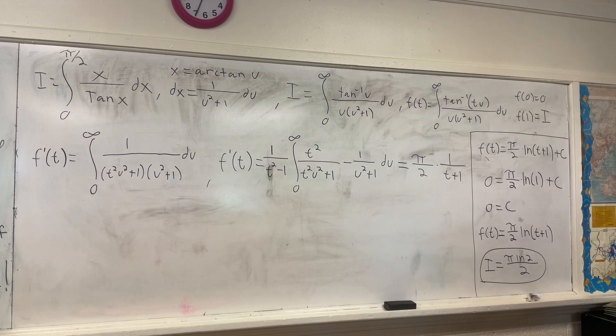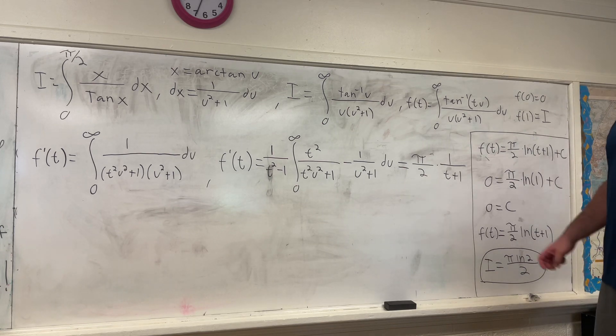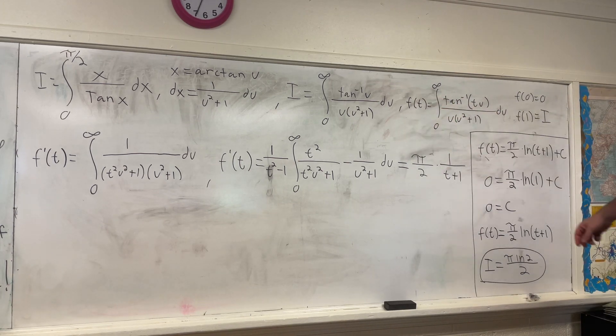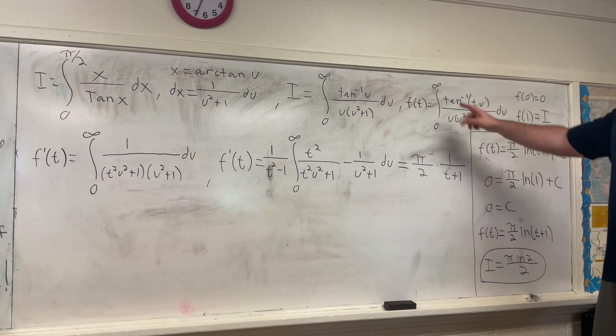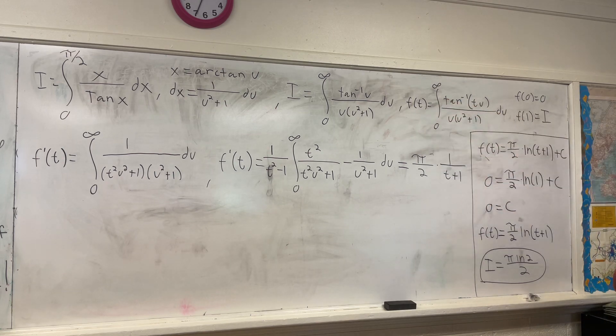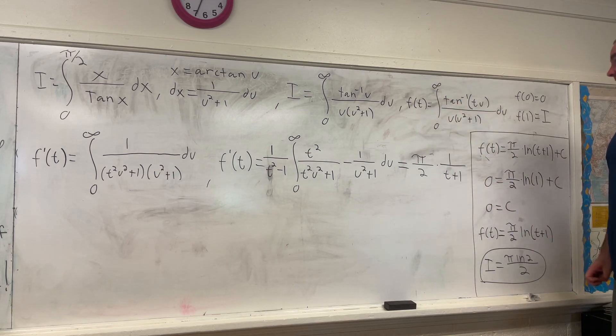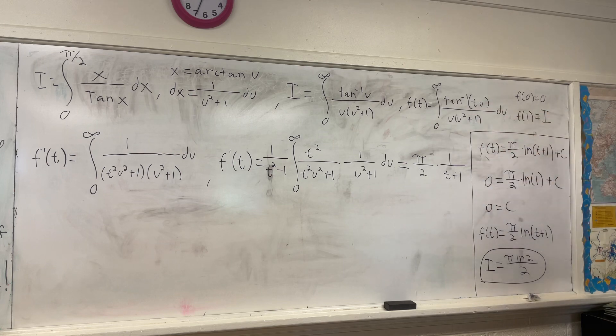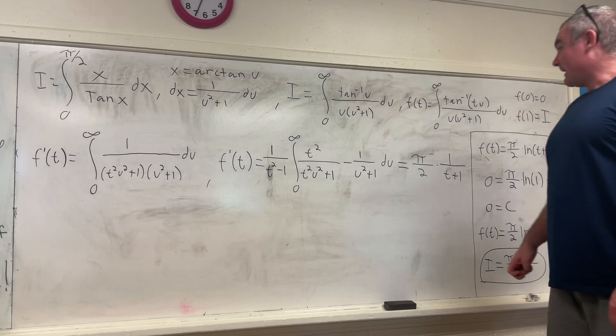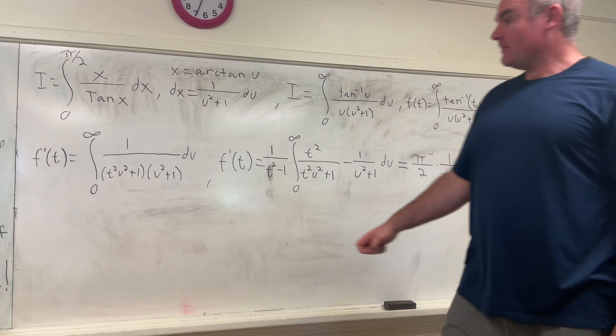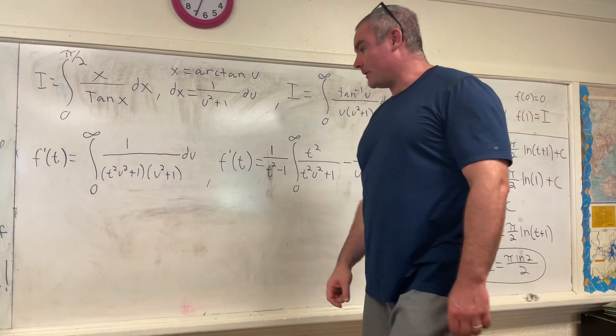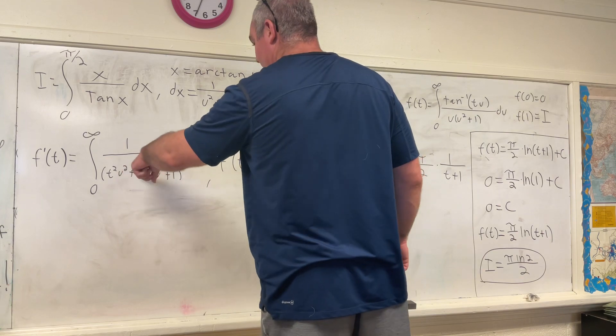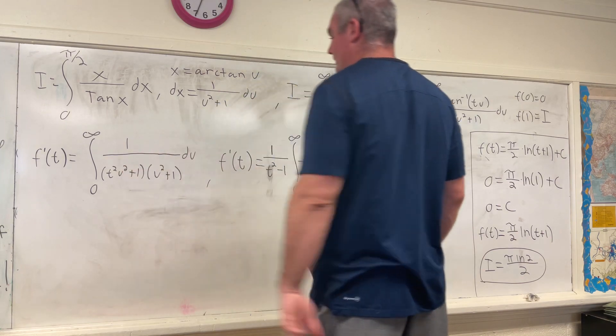What we do is we use the Leibniz rule for differentiation under the integral sign to take a derivative on both sides. So we will get f prime of t is equal to the derivative with respect to t of this thing. The Leibniz rule says you can bring the derivative directly inside the integral sign as a partial with respect to t in this case. And what you do if you use that rule is f prime of t is equal to the integral from 0 to infinity of 1 over t squared u squared plus 1 times u squared plus 1 du.